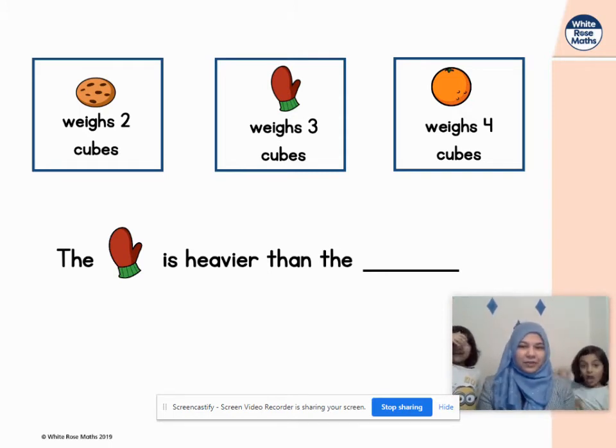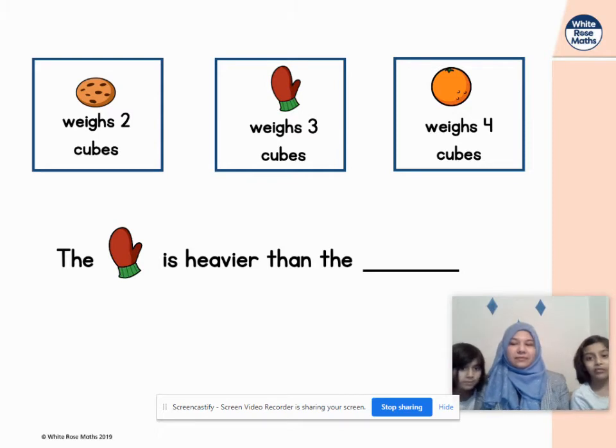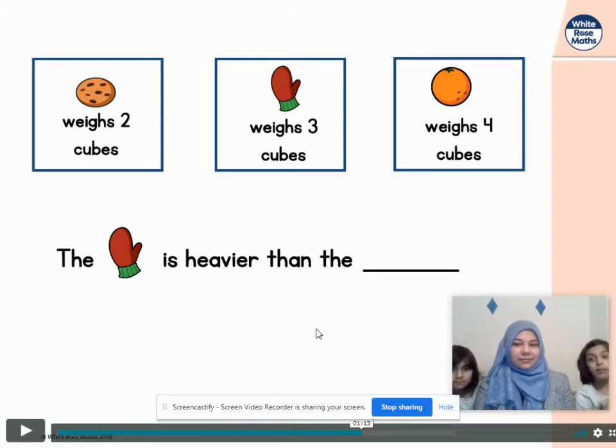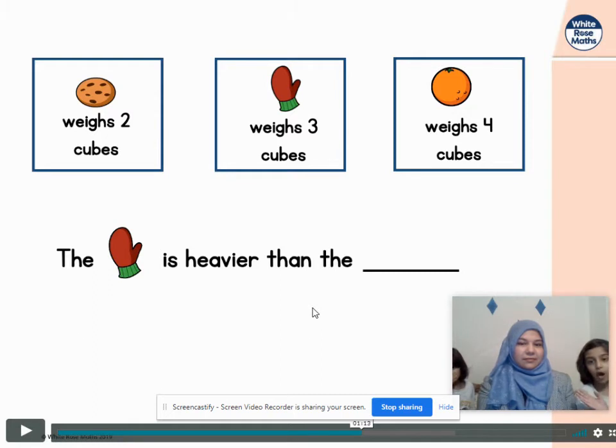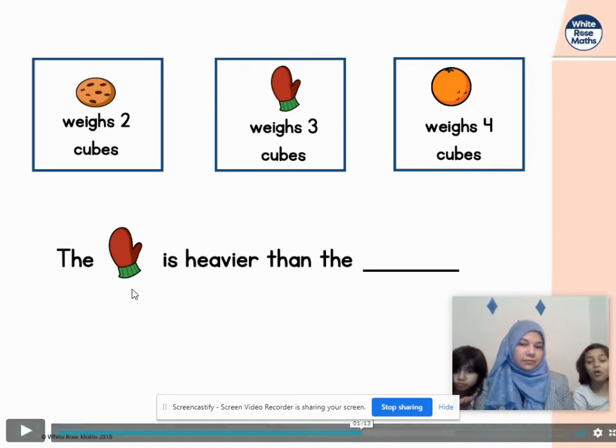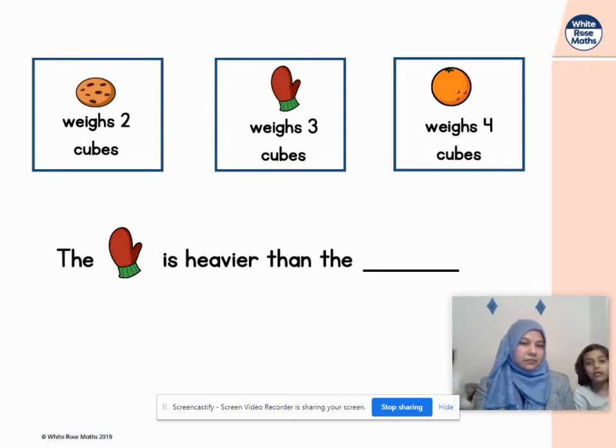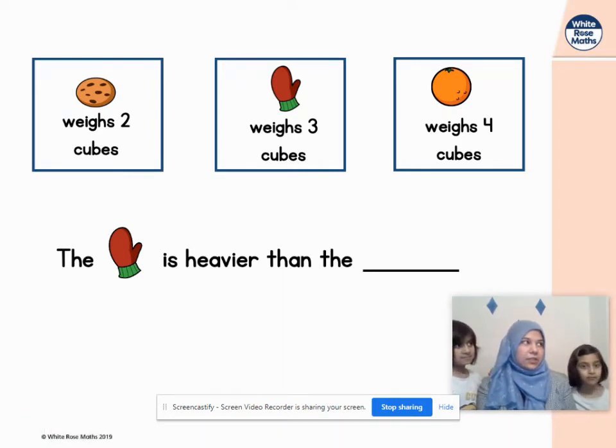And why is it? How do you know that? Go on Shafia. Because the cookie weighs two cubes and the mitten weighs three cubes. But four is an older number than three. So we take away four and just keep thinking about three and two. Now, two is a smaller number than three, and three is a bigger number than two. So it must be that the mitten is heavier than the cookie. Okay, well done. A really good explanation.